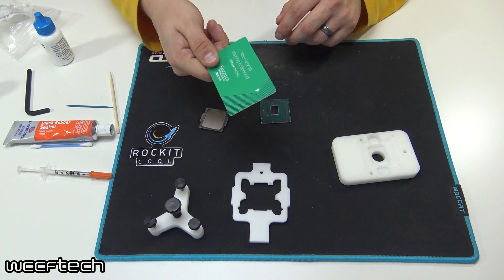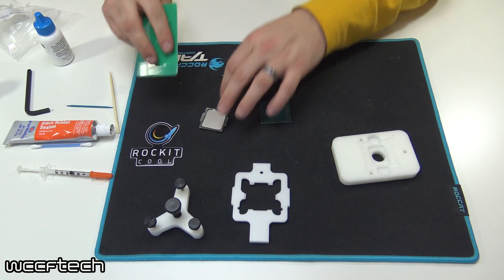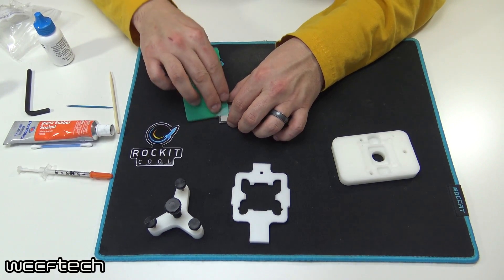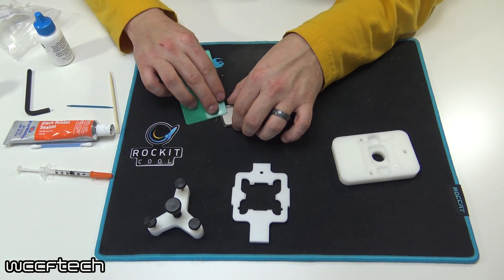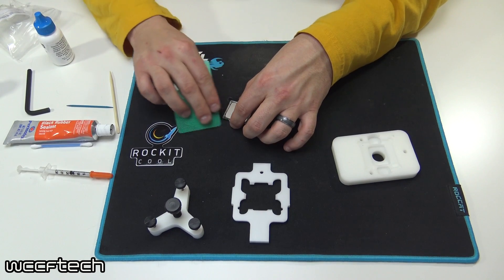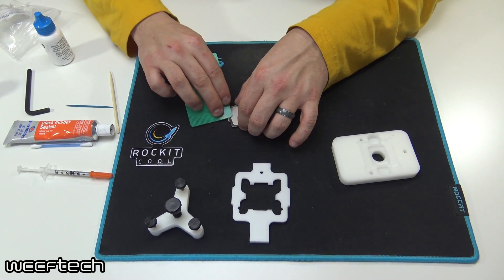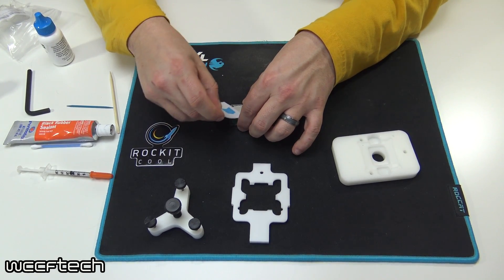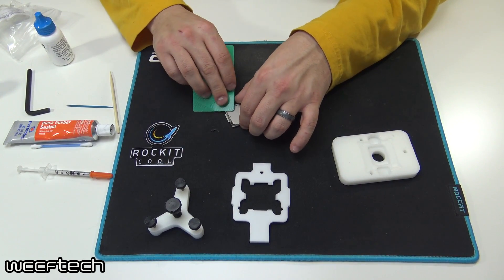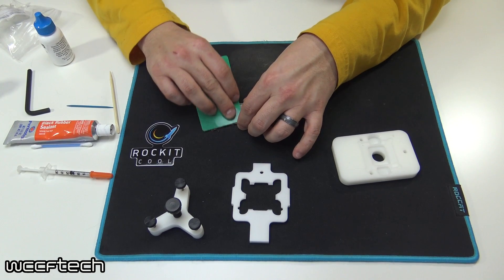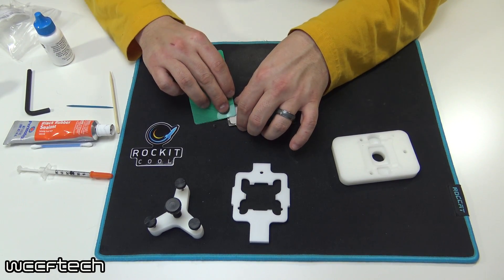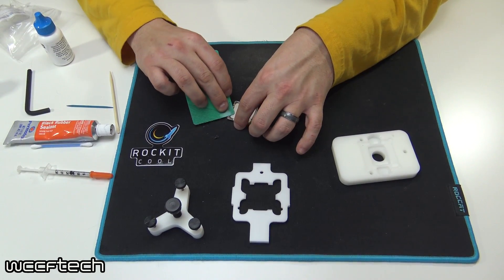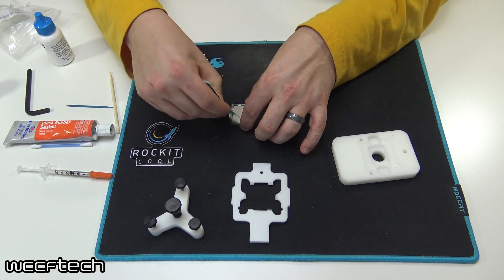So that's where I recommend taking something like a card - this is an old hotel room key - and then just kind of scraping the excess off because we're going to replace this with some fresh silicone here in just a few moments. We don't want to leave this on here because that'll leave unwanted space between the IHS and the PCB.